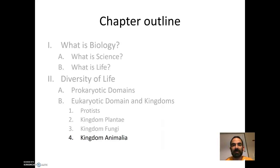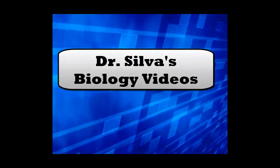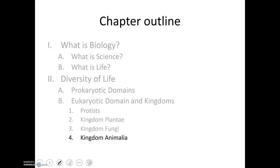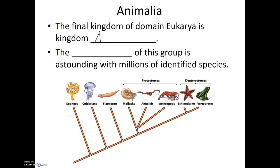In this video, we're going to look at the diversity of animals, starting with invertebrates. So let's talk about the last kingdom in domain Eukarya, and that is Kingdom Animalia. The diversity of this group is astounding. With millions of identified species, most of these are invertebrates.